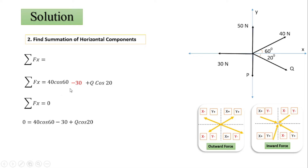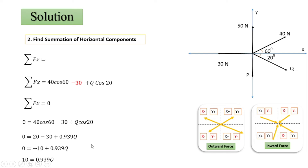Setting ΣFx = 0: 40 cos 60° − 30 + Q cos 20° = 0. This gives 20 − 30 + 0.939Q = 0, which simplifies to −10 + 0.939Q = 0. Therefore 0.939Q = 10, and dividing gives Q = 10.649 N.